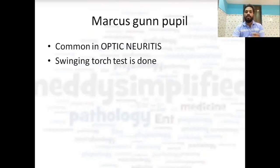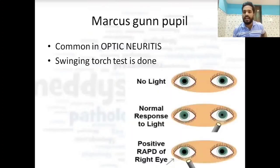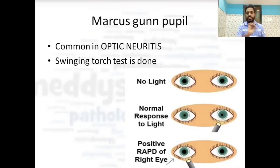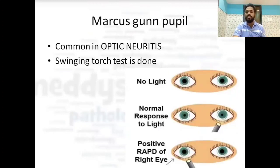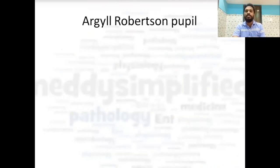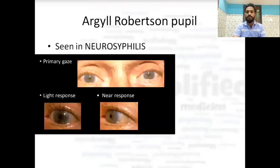Marcus Gunn pupil is usually seen in optic neuritis. It is checked using the swinging torch test. Normally, shining light causes pupil constriction. In Marcus Gunn pupil, instead of constricting, the pupil dilates or remains unaffected by light.